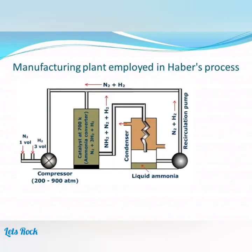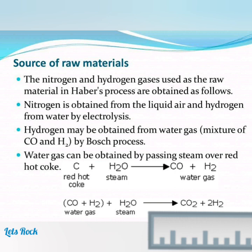Manufacturing plant employed in Haber's process. Source of raw materials: The nitrogen and hydrogen gases used as raw materials in Haber's process are obtained as follows. Nitrogen is obtained from liquid air, and hydrogen from water by electrolysis. Hydrogen may also be obtained from water gas — a mixture of CO and H₂ — by the Bosch process. Water gas can be obtained by passing steam over red-hot coke.